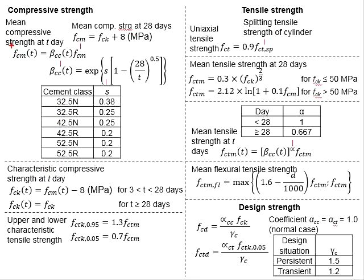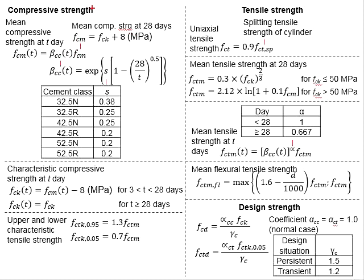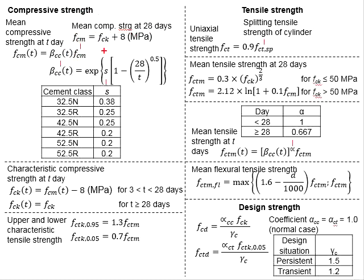This is the formula to determine the mean compressive strength at T-day. It is a function of FCM, which is the mean compressive strength at day 28. The FCM can be obtained by the characteristic compressive strength of concrete plus 8 MPa.